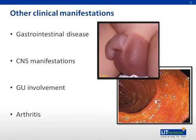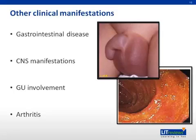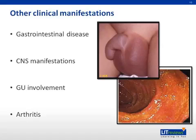Gastrointestinal manifestations can occur in up to 80% of children with HSP and range from mild to more significant findings. Mild symptoms include nausea, vomiting, and abdominal pain. The most common significant GI complication is intussusception, but others include hemorrhage, bowel ischemia, and perforation.